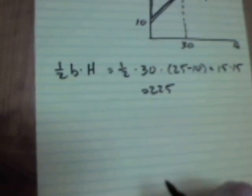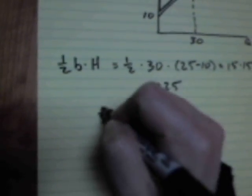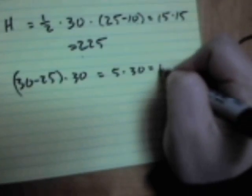So you're adding on to the 225 the area of this rectangle here. 30 minus 25, which is 5, times 30. So 5 times 30, which is an additional 150. So it would be 225 plus 150 for a grand total of 375. And that is how you calculate producer surplus.